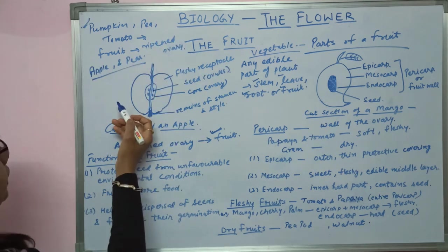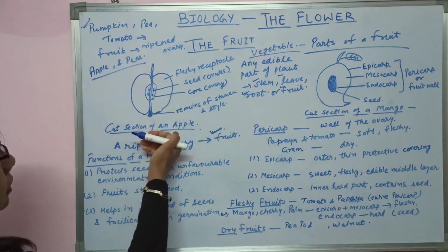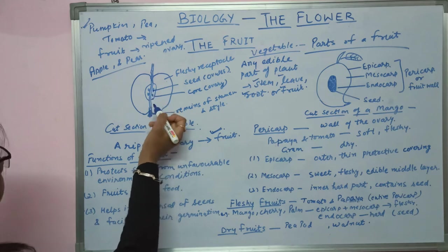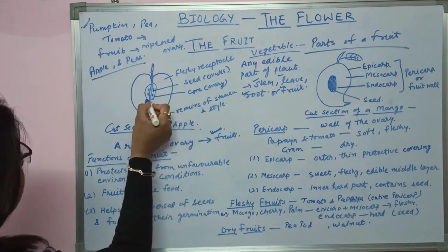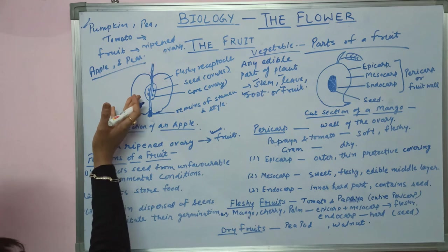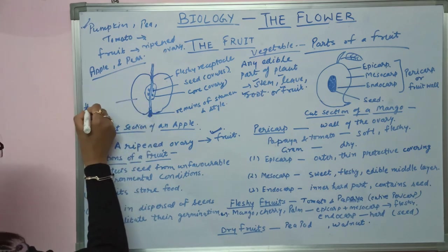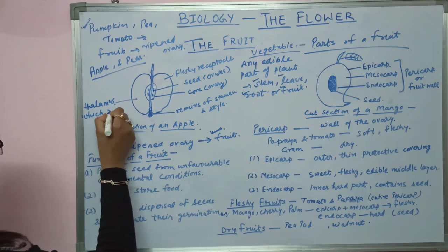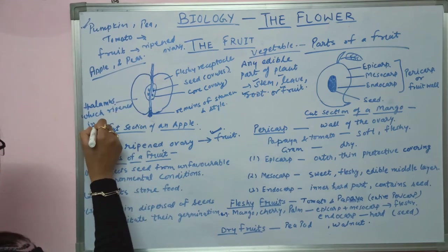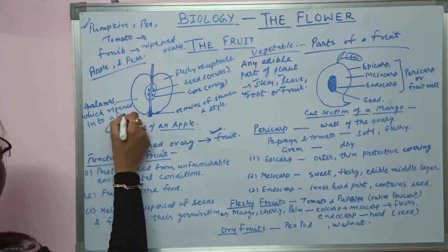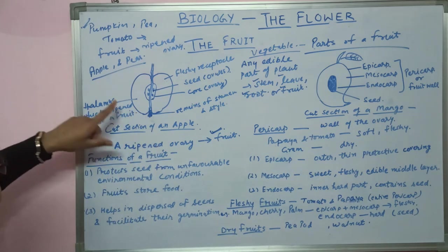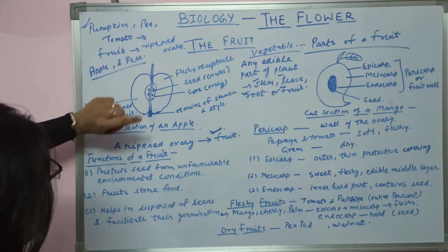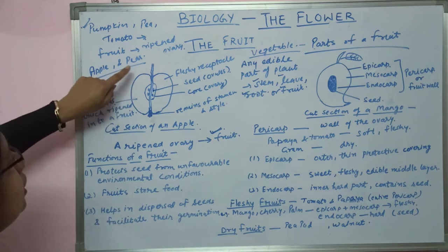But in the case of apple and pear, the condition is slightly different. In these fruits, the ovary is inside the fruit. The ovary doesn't ripen into the fruit — it is the thalamus part. It is the thalamus which ripens and changes into a fruit. In pear also, the ovary is inside the fruit, inside this fleshy receptacle — here it is the ovary.